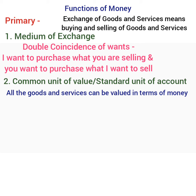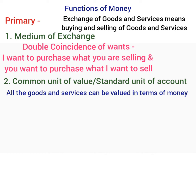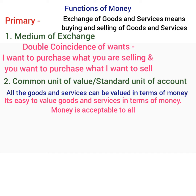In the barter system, there was no common unit in which all commodities could be measured, making it very difficult to determine the value of one commodity in terms of another. After the evolution of money, it serves as a standard unit of account, easy to value goods and services and acceptable by all. For example, wheat can be valued at Rs.1500 per quintal. This function facilitates comparison between markets, makes accounting of transactions possible, and allows growth to be numerically measured in terms of GDP.